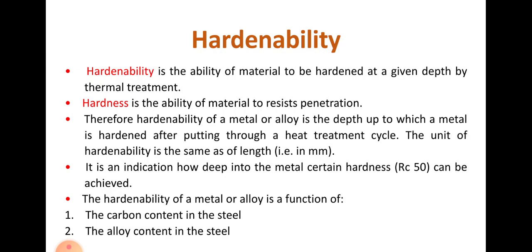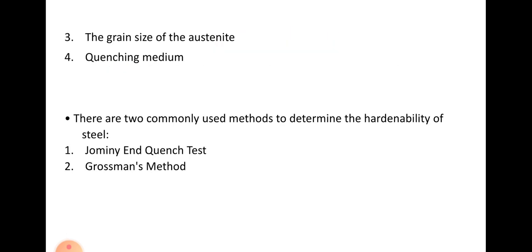So hardenability of a metal or alloy is a function of mainly four factors. That is first, carbon content of the steel; second, the alloy content in the steel; third, the grain size of the austenite; and last is quenching media.